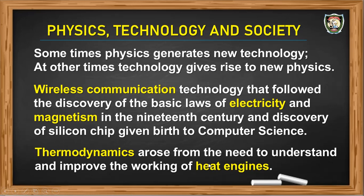I give you one more example: thermodynamics and heat engine. These are two different entities. Thermodynamics is a separate branch of science — it is a fundamental science — whereas a heat engine is a technology. Here, thermodynamics is a branch of science which was born to improve the efficiency of heat engines. So this is how sometimes we have a new branch of science due to the growth of technology, and most of the time technology is always born due to progress in basic science.